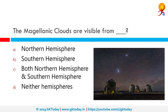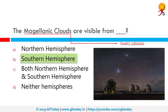The Magellanic Clouds are visible from the southern hemisphere. They are two irregular dwarf galaxies visible from the southern hemisphere, members of the local group, and are orbiting the Milky Way galaxy.